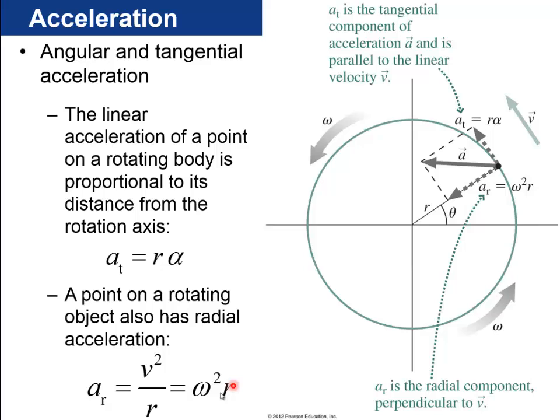So the actual acceleration is along a diagonal. If you have an object that is both rotating and has angular acceleration, there will be tangential acceleration (speeding up) plus radial centripetal acceleration. These are two components of the actual acceleration, which is neither towards the center of the circle nor tangent — it's along this diagonal.